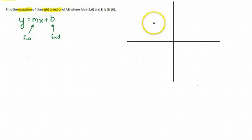So the first point A is negative 5, 6, which let's say is about here, negative 5, 6. And B is 9, 10, which let's say is over here somewhere. And it's a line segment, so I'm going to connect that line.